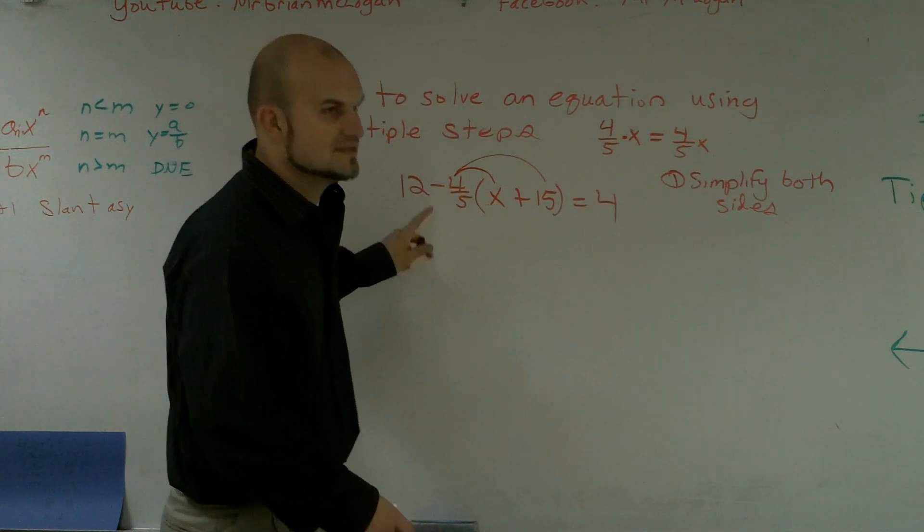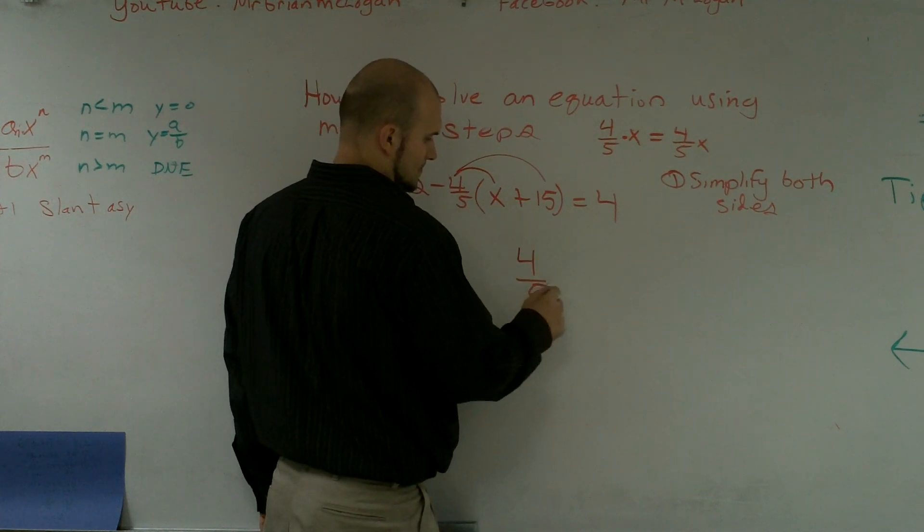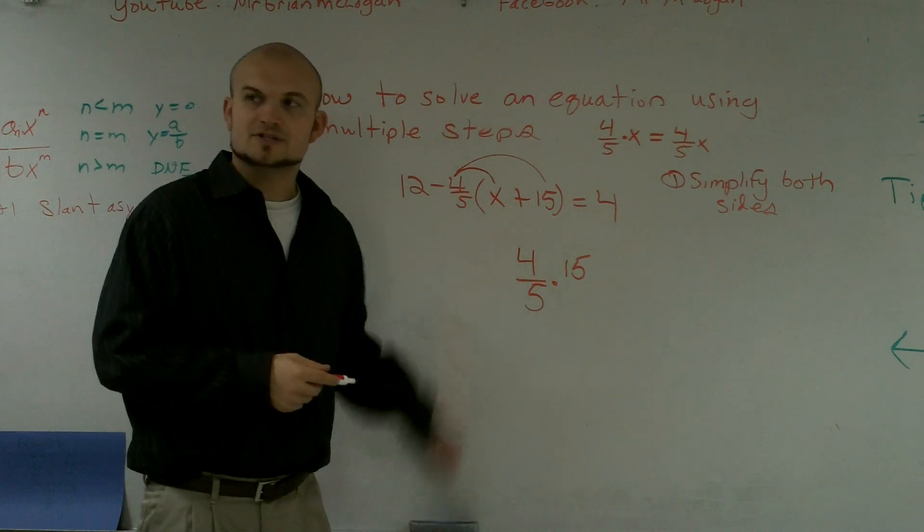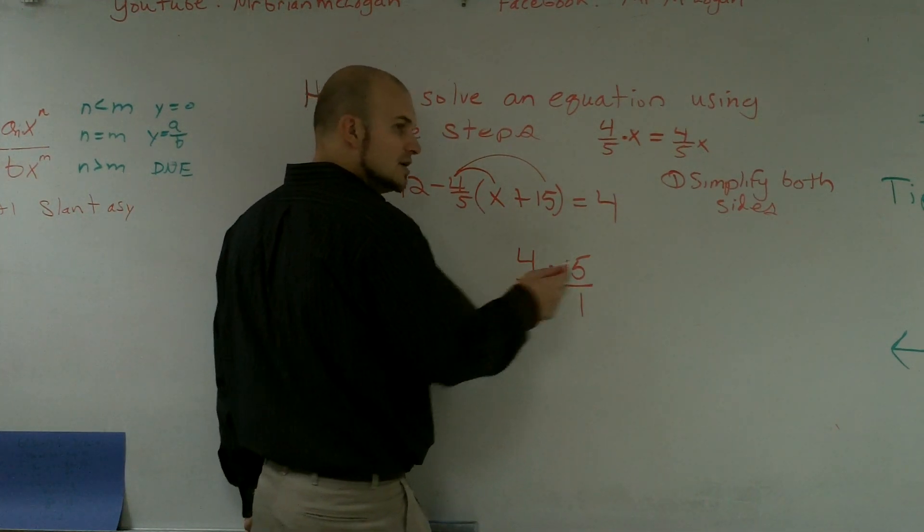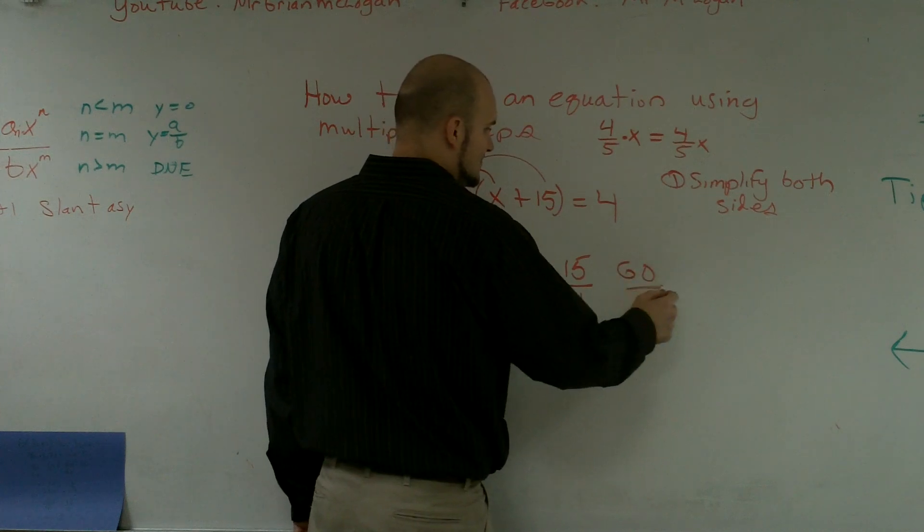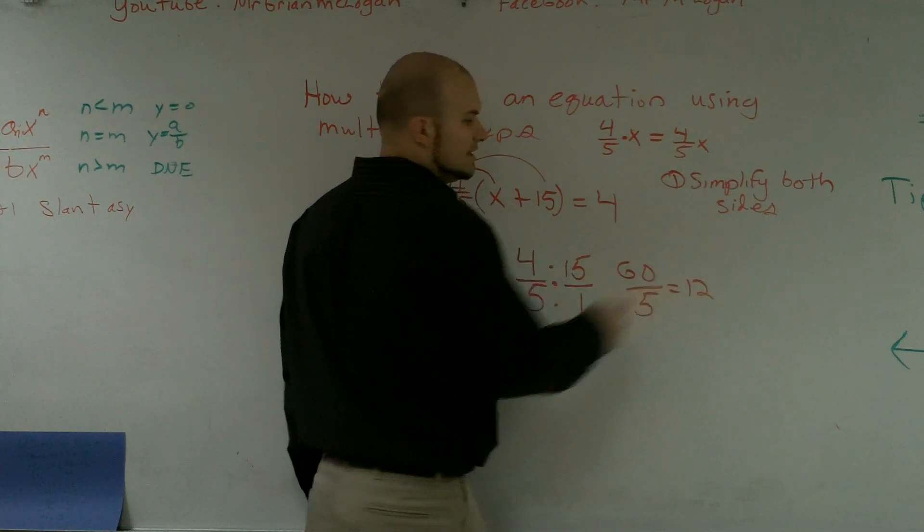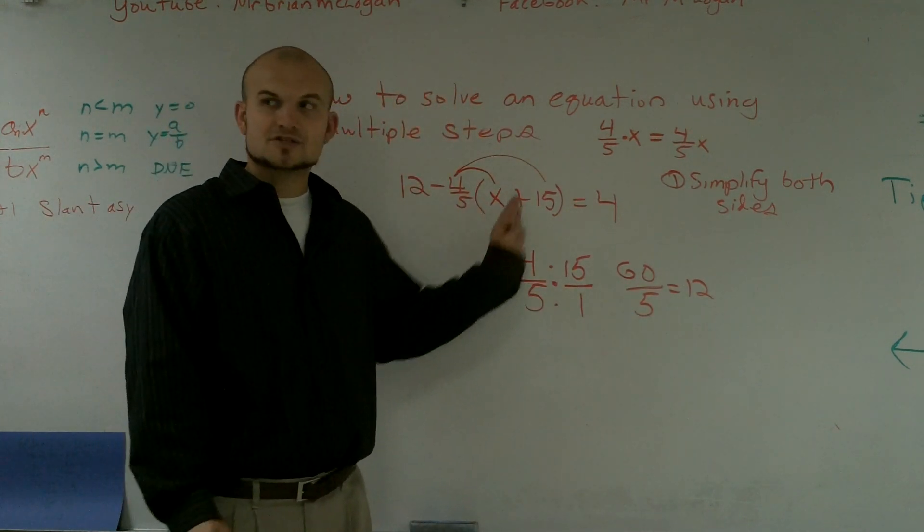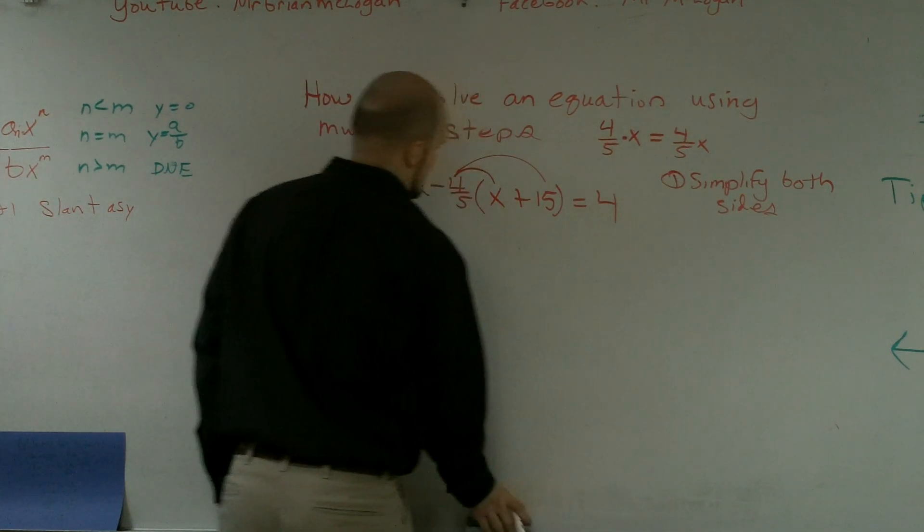However, 4/5 times 15, we should remember this. What happens when you multiply a fraction times a whole number? You change your fraction to a whole number and you multiply it across. 4 times 15 is 60 divided by 5. 60 divided by 5 equals 12. So everybody should know how to multiply a fraction times a whole number.